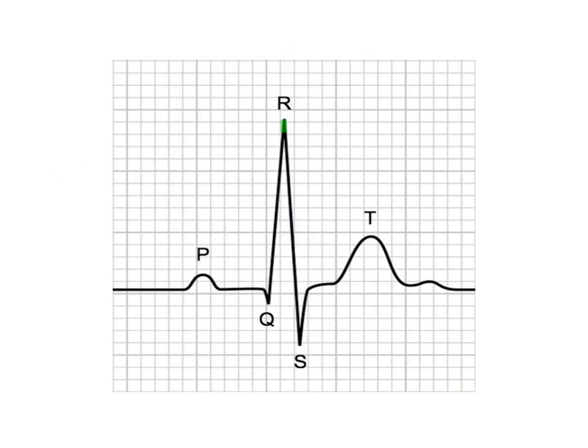The first waveform on the ECG is the P wave. It is a small deflection of the ECG, and it is called atrial depolarization. The signal comes from the sinoatrial node to the atria, making the atria contract.